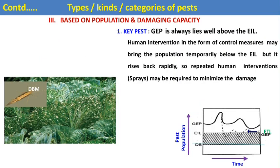The third category is based on population and damage capacity. The first is the key pest: its General Equilibrium Position always lies well above the Economic Injury Level. Human intervention through control measures may bring the population temporarily below the EIL, but it rises back rapidly, so repeated human intervention is required to minimize damage. DBM (diamondback moth) on cruciferous vegetables or cabbage is the most important key pest.